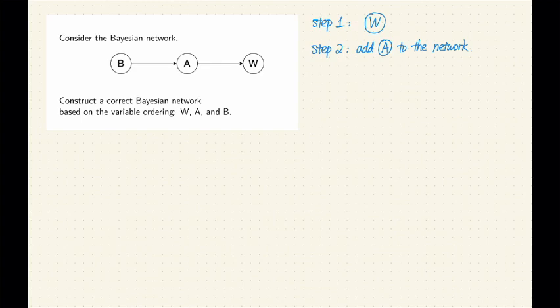So recall the rule for choosing the parent nodes. We need to choose a set of parents from the existing nodes. And we need to make sure this set is as small as possible so that this set can separate the current node from the rest of the existing nodes in the network. So given the set of parents, the node we're adding should be independent from the other nodes in the network.